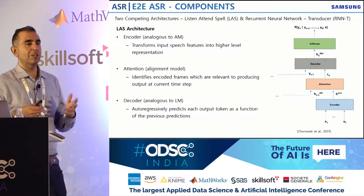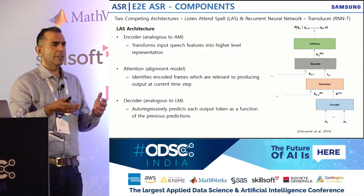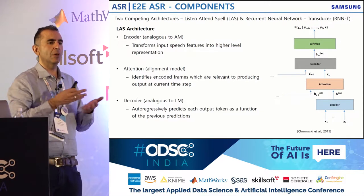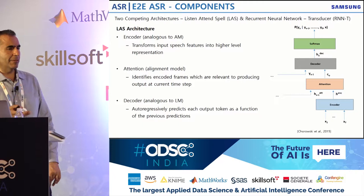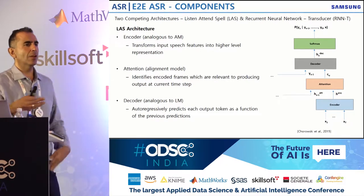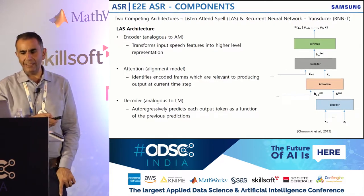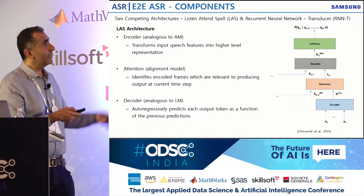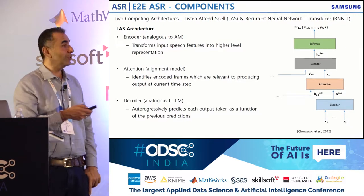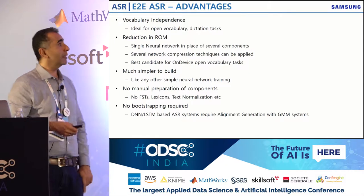People have also experimented with the RNN transducer model, which takes a CTC model — a simpler network that assumes conditional independence between inputs — and appends a predictor network, jointly learning together. The attention mechanism used in these models has also been used for language translation. There are many kinds of architectures out there and lots of research is happening currently.